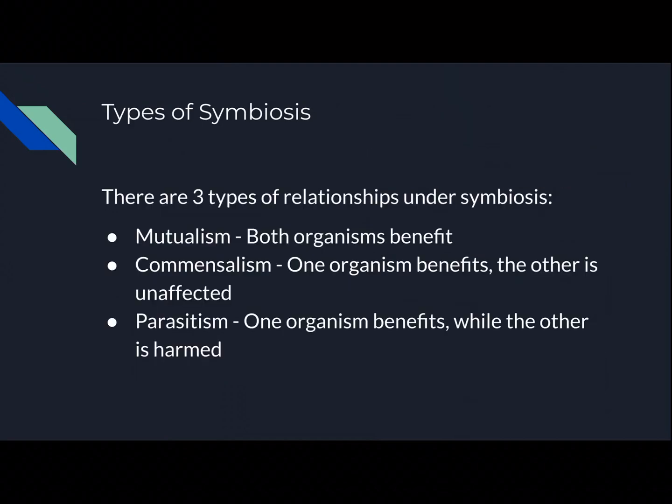The types of symbiosis. There are three types of relationships under symbiosis. Mutualism, where both organisms benefit from each other. Commensalism, where one organism benefits and the other is unaffected. And parasitism, where one organism benefits and the other is harmed.